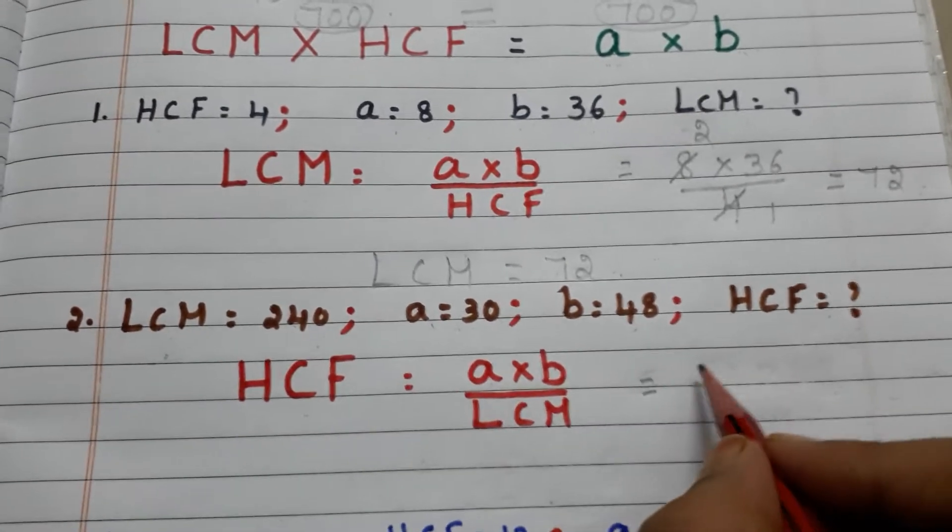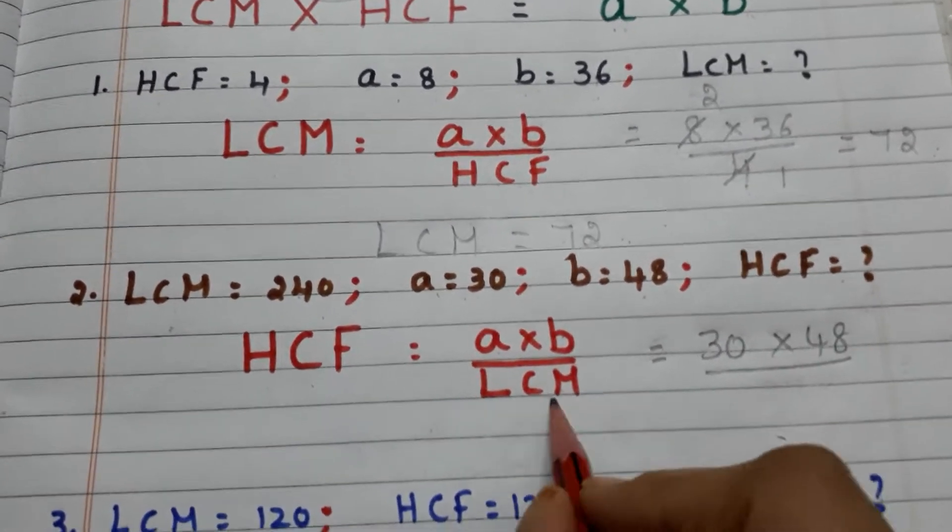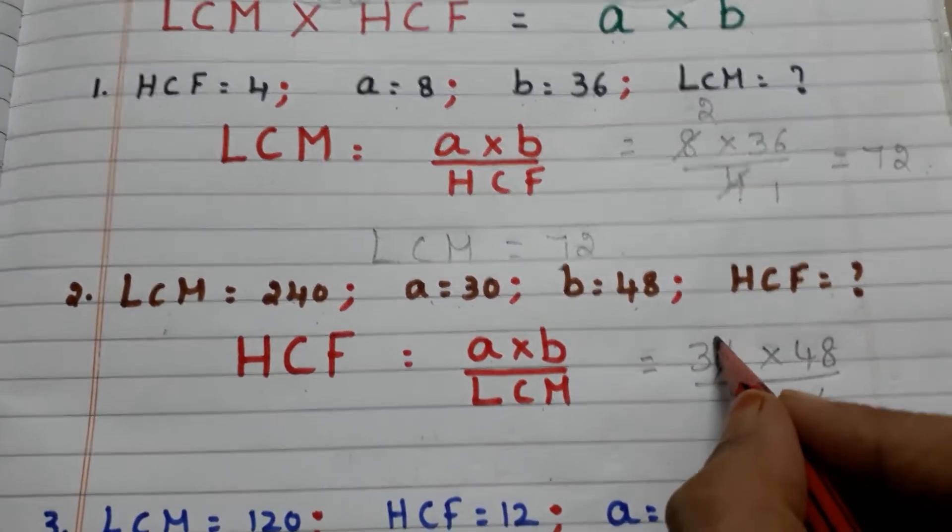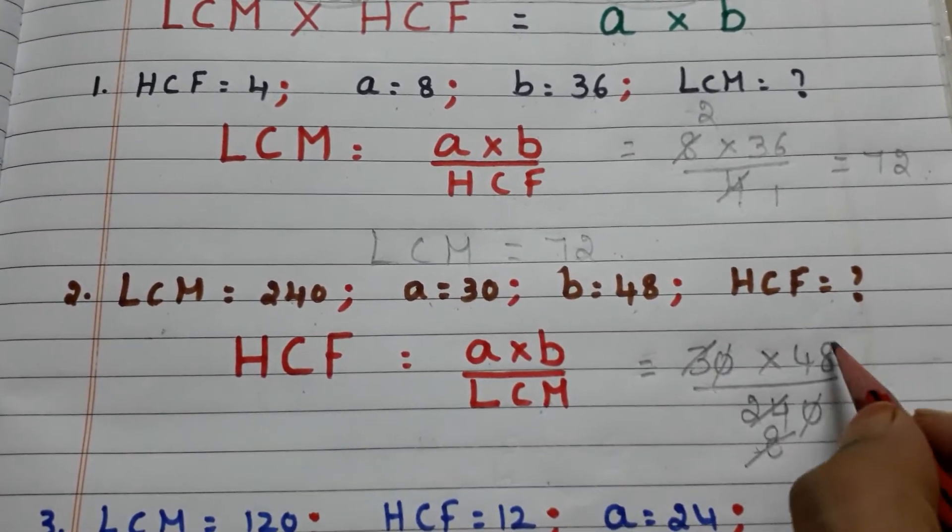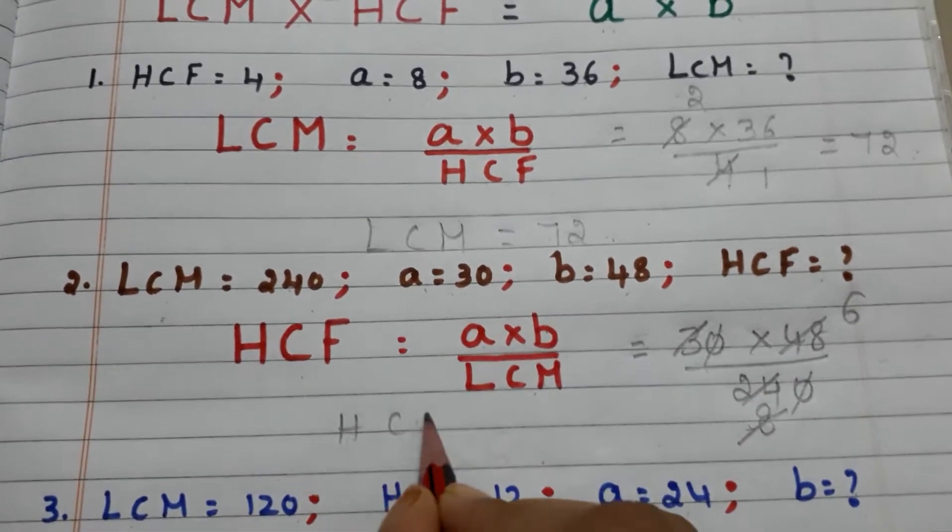What is a? 30 into 48 by what is LCM? 240. First you cancel the zeros. 3 ones are 3, 3 eights are 24 and 8 ones are 8, 8 sixes are 48. So the HCF equals 6.